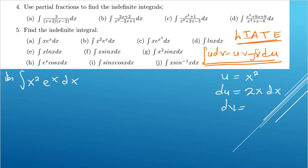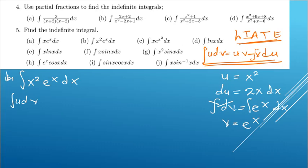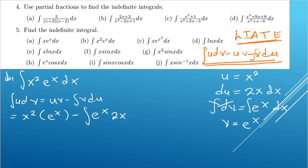dv equals eˣ dx, and integrating gives v = eˣ. Applying the formula — integral of u dv equals uv minus integral of v du — u is x², v is eˣ, so we get x²·eˣ minus the integral of eˣ·2x dx.